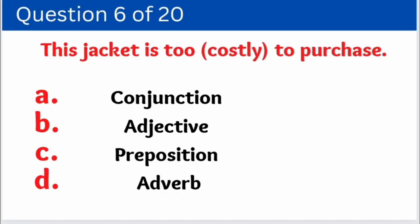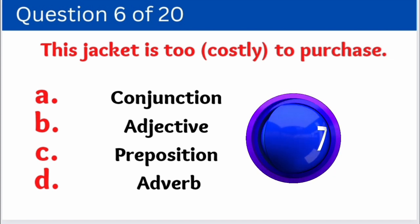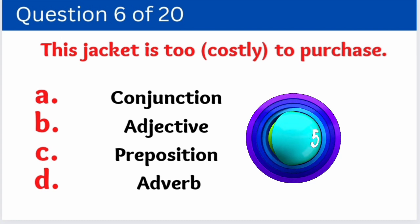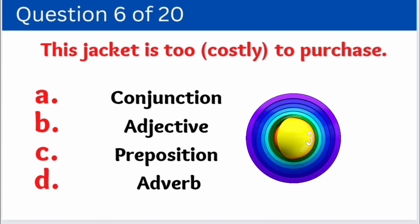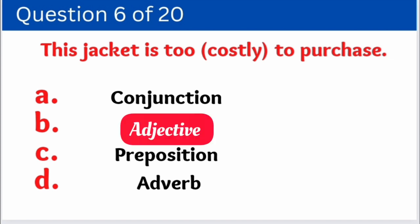Question number six: 'This jacket is too costly to purchase.' Here we have to identify how the word 'costly' is used. Options are: A. Conjunction, B. Adjective, C. Preposition, D. Adverb. And the correct answer is option B — Adjective.